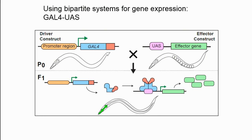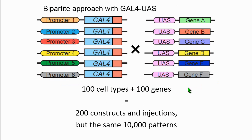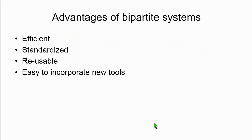Thankfully, there are easier ways, namely using bipartite gene expression systems, the first of which was GAL4, originally described in Drosophila. Instead of coupling your promoter to the gene, you have your promoter drive the GAL4 gene — this is your driver construct. Upstream of your gene of interest, you place a GAL4 binding site called UAS — this is your effector construct. Neither construct is active alone, but after crossing them, the promoter drives GAL4, which binds to the UAS and expresses your gene of interest.